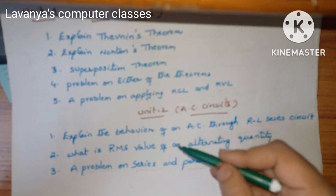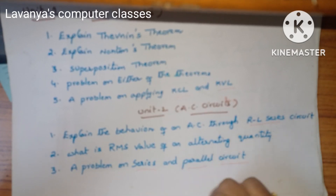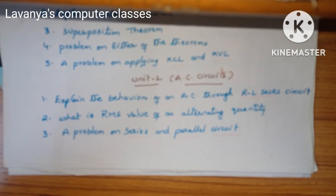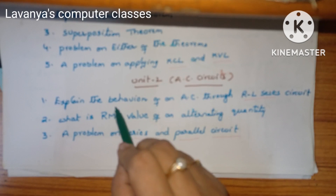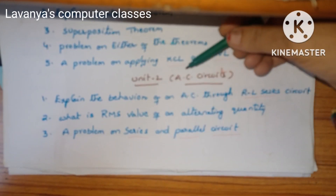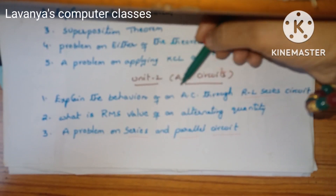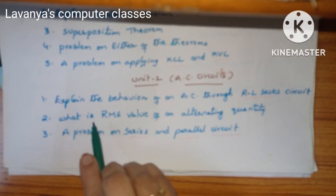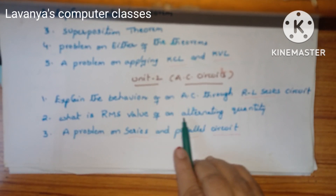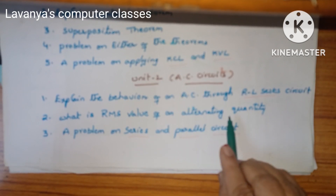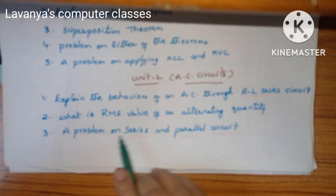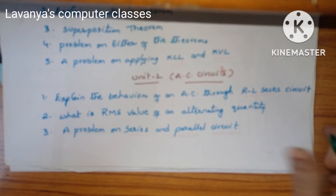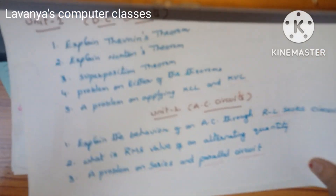Next, unit 2 important questions — the concept is AC circuits. Explain the behaviour of AC circuit through RL series circuit, and what is the RMS value of an alternating quantity. Also a problem on series and parallel circuits.